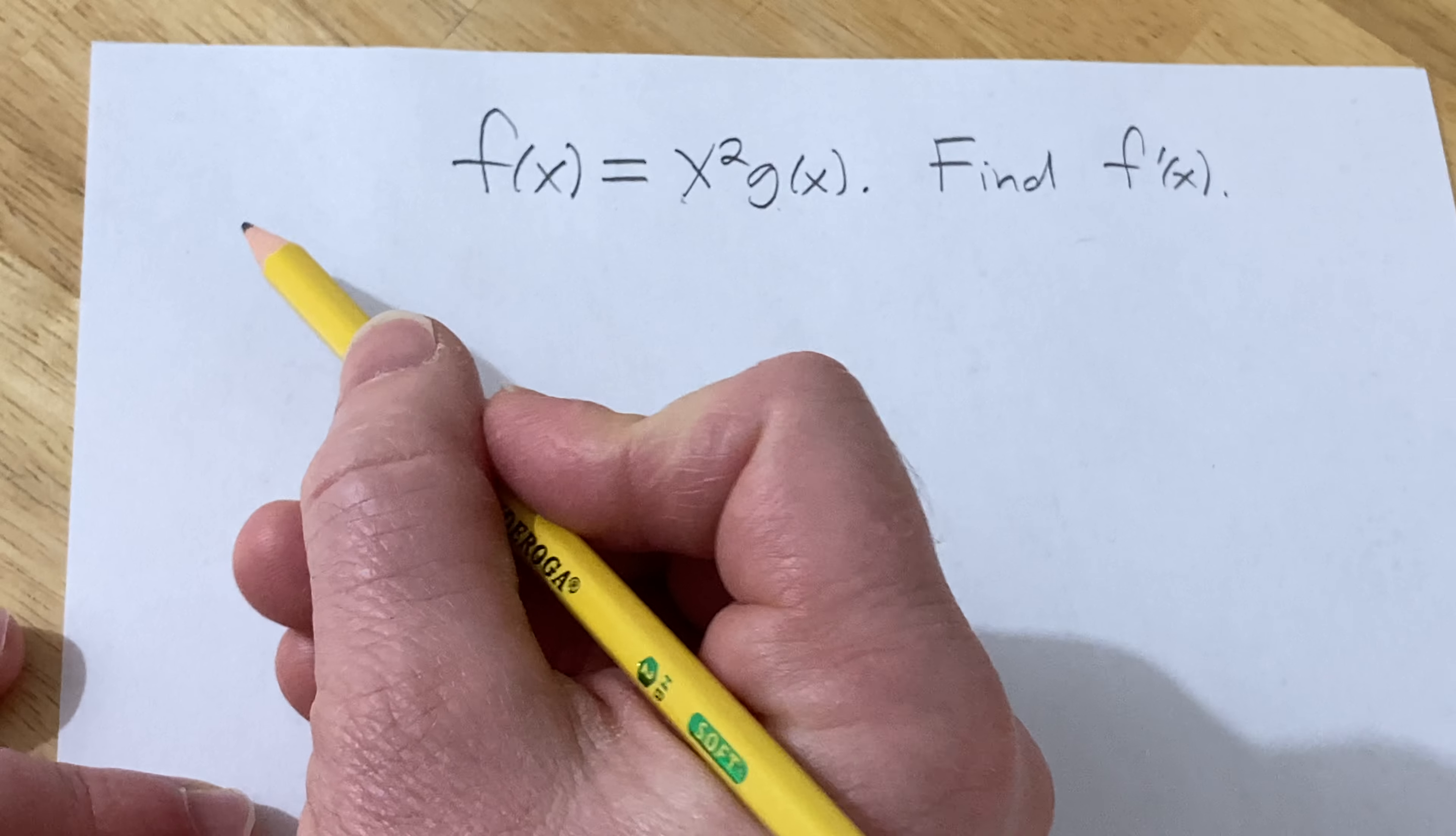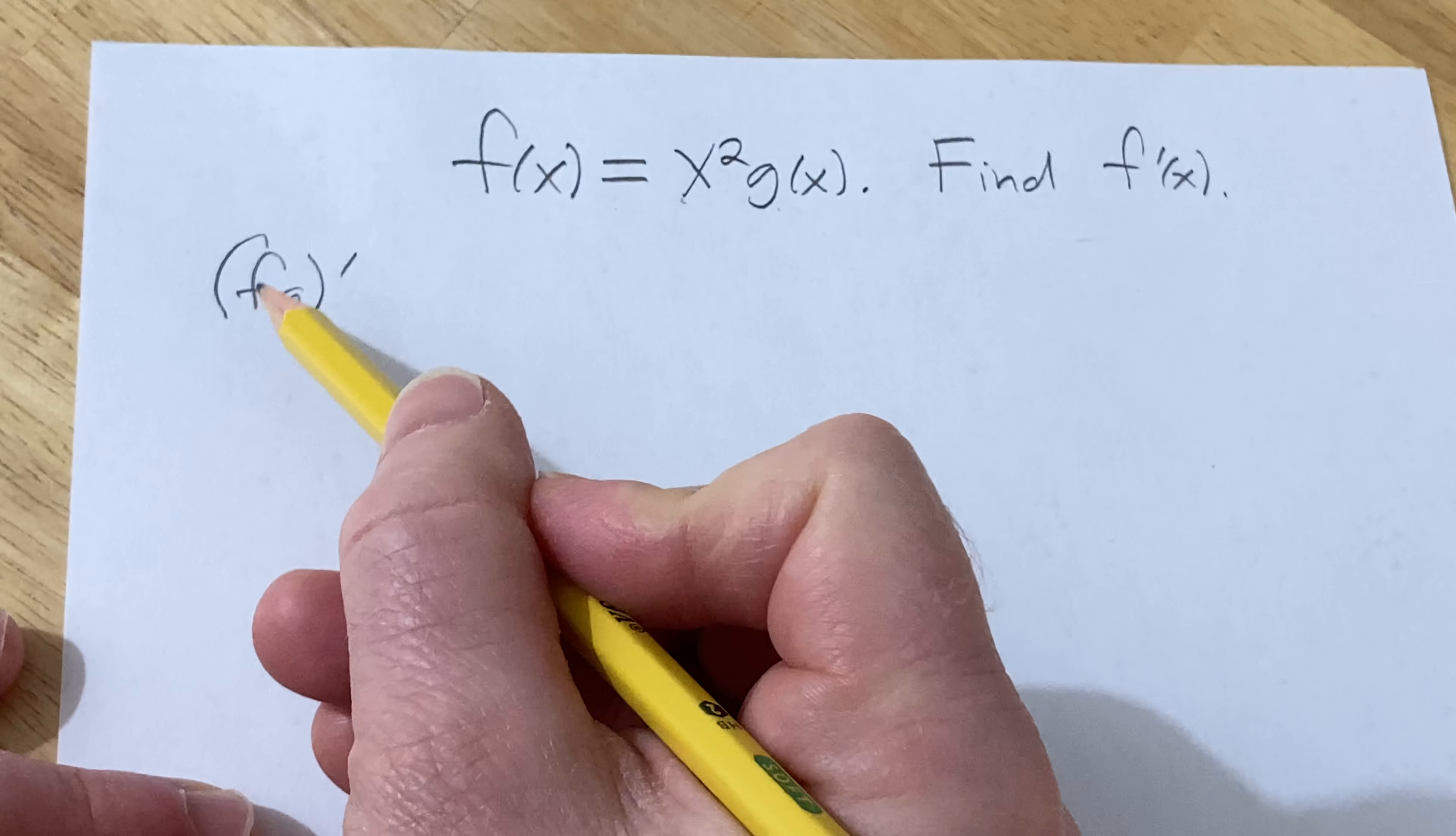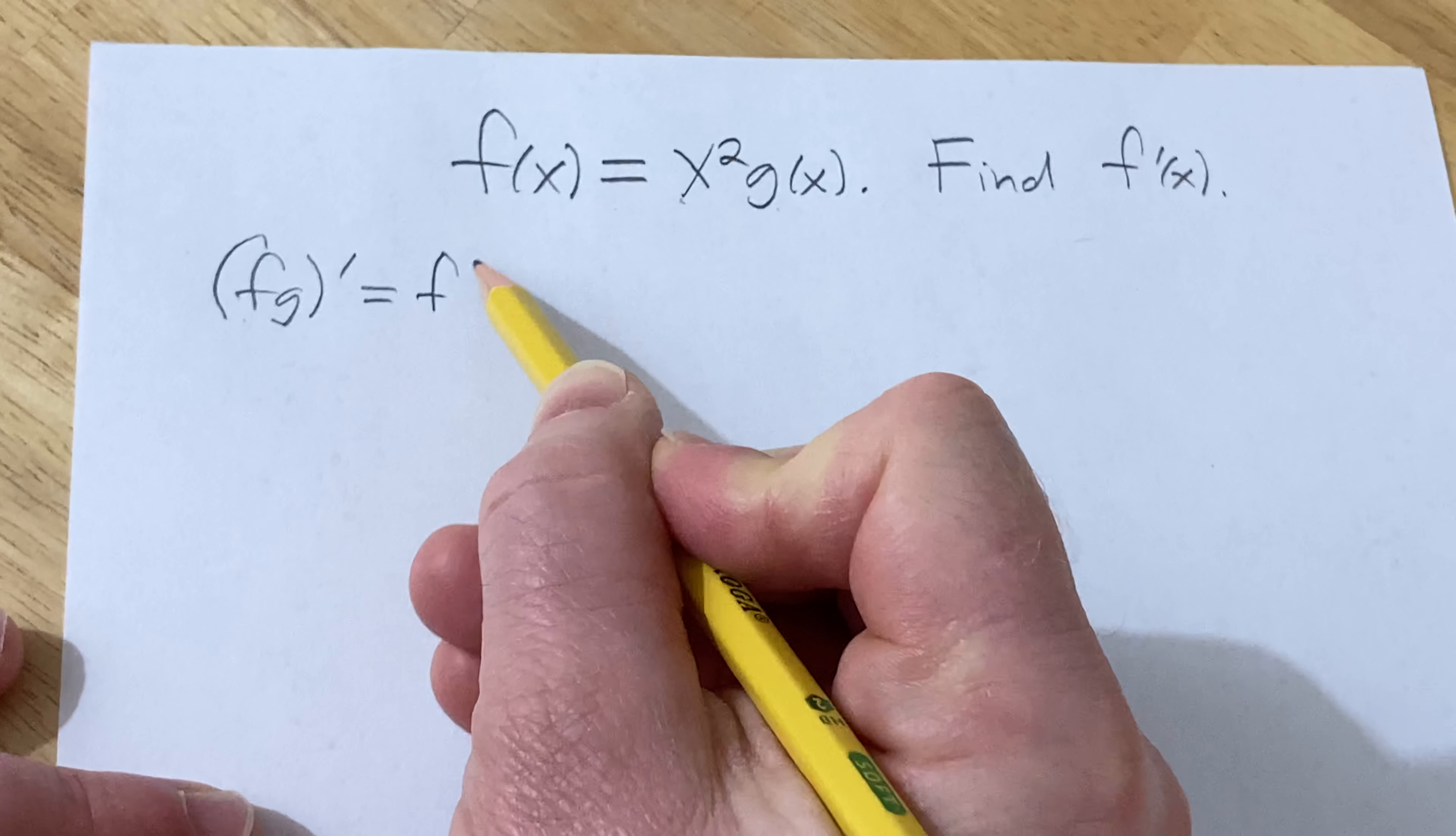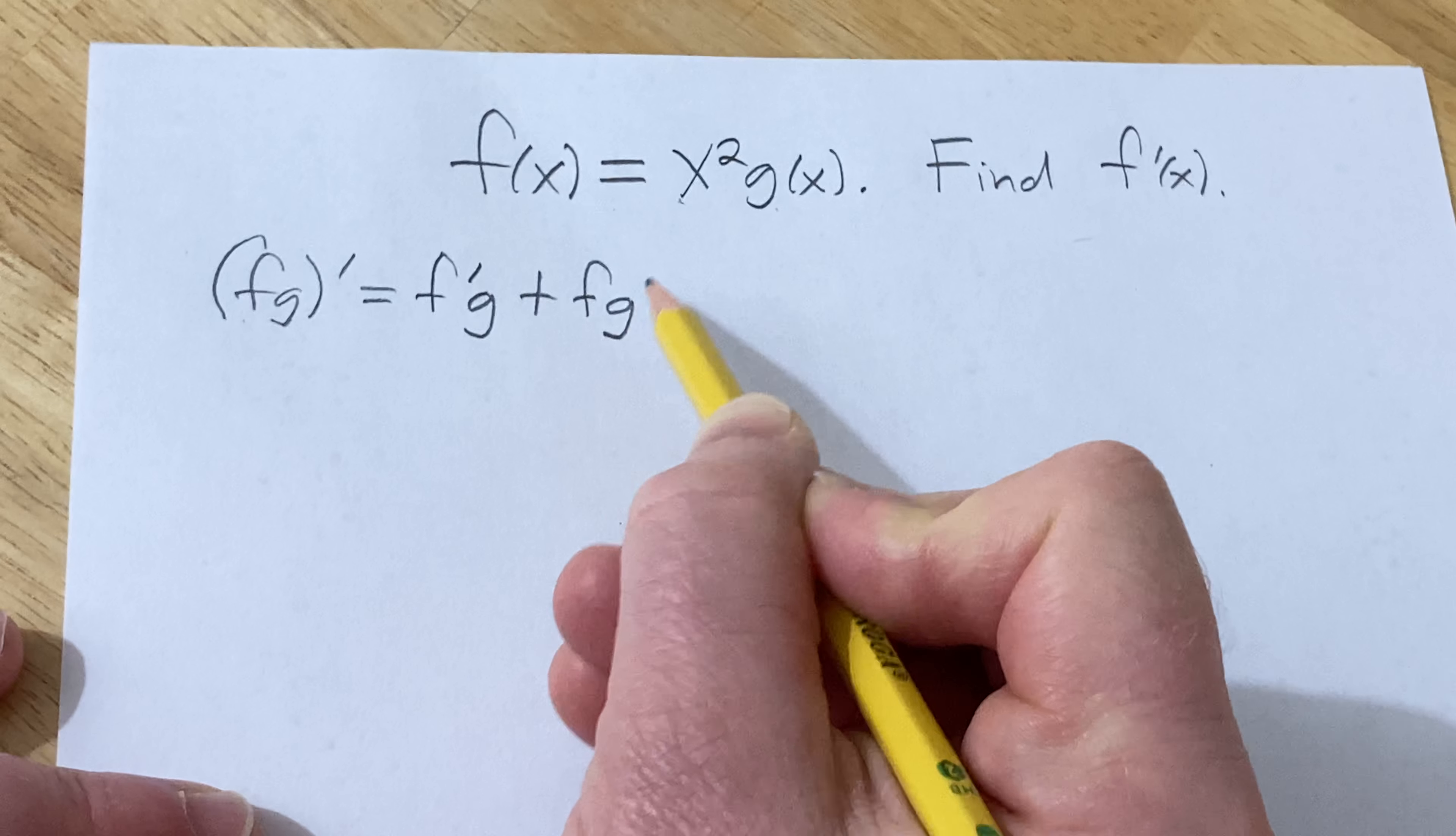So recall the product rule. The product rule says if you have f times g and you want the derivative, think of f as your first function and g as your second function. So it's the derivative of the first times the second plus the first times the derivative of the second.